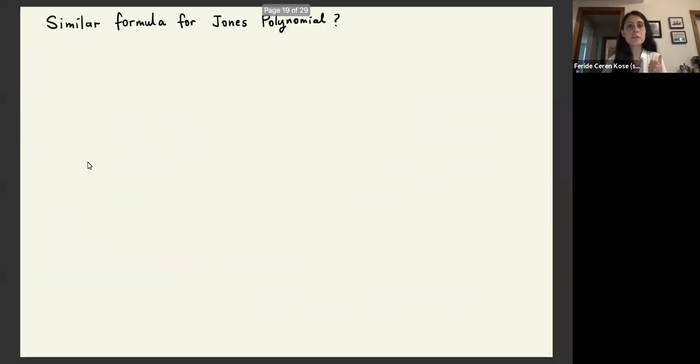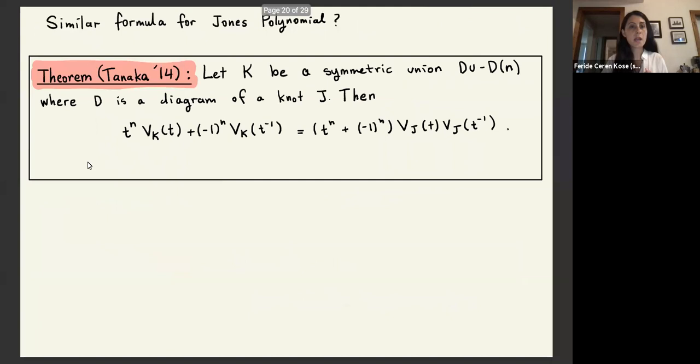So we wonder if we can find a similar relation for Jones polynomial. And Tanaka derives such a formula in terms of the Jones polynomial of the partial knot of the symmetric union and the number of inserted crossings.